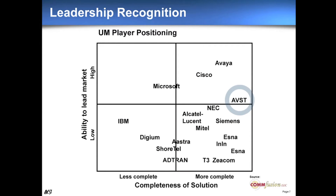If you look at the COM fusion quadrant — which unlike the UC quadrant specifically tracks unified messaging — we're up in the upper right-hand quadrant, furthest to the right for the most complete solution. Although we aren't ranked as high as IBM and Cisco in our ability to shape the market, that has to do with our marketing budget as opposed to our functionality. We believe we can talk with a fair amount of expertise on unified messaging in the enterprise today.